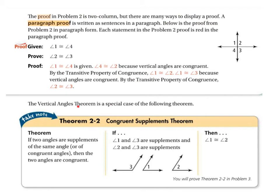The Vertical Angles Theorem is a special case of the Congruent Supplements Theorem, which says: if two angles are supplements of the same angle — meaning both add with that angle to 180 — then the two angles are congruent. Because vertical angles both form a linear pair with some third angle, they're both supplements of that angle. So if it takes some amount to add to that angle to get 180, both angles must be the same amount.